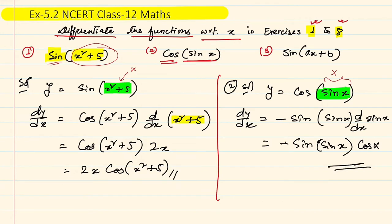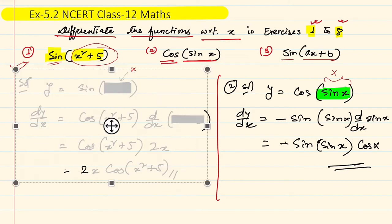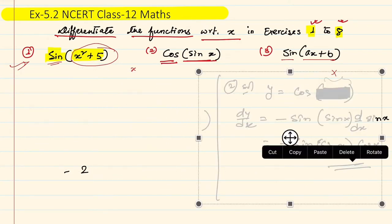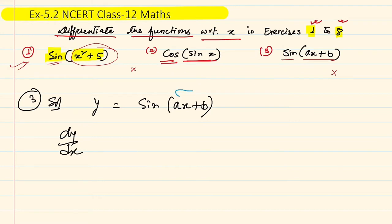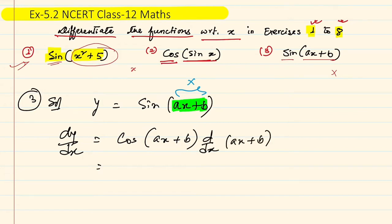Question number 3: y = sin(ax + b). For dy/dx, consider the whole argument as x; differentiation of sin x is cos x, so we get cos(ax + b). Then differentiate the interior: derivative of ax + b is a, and derivative of b (constant) is 0. So the result is a·cos(ax + b).